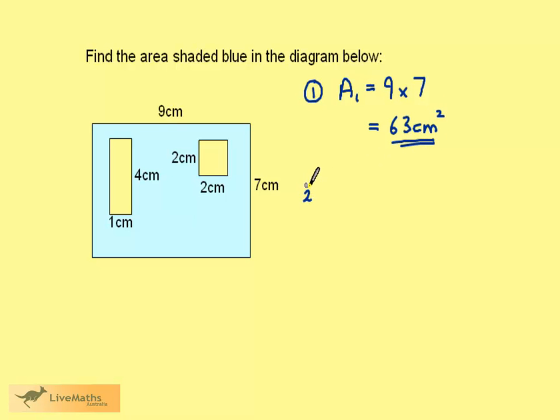The second area is this square. Area 2 is 2 times 2, which is 4 centimeters squared.